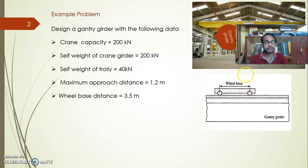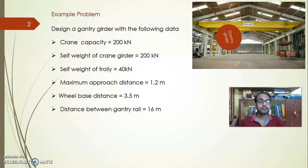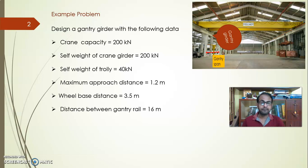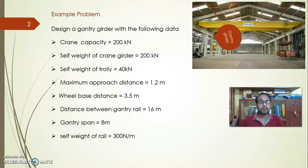The wheelbase distance — the distance between the wheels of the crane — is given as 3.5 meters. The distance between the gantry rails, representing the crane span (gantry center-to-center distance), is given as 16 meters. The gantry span, which is the simply supported beam span between columns, is 8 meters. The self-weight of the rail section is 300 N/m, clipped over the gantry girder.